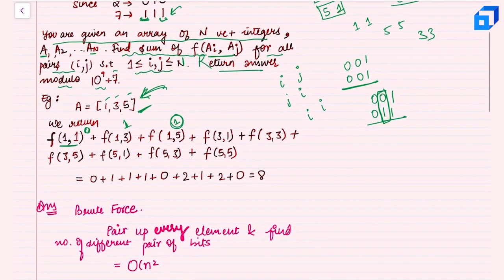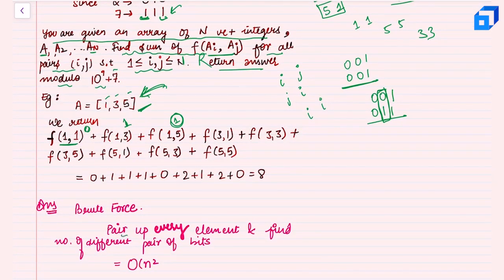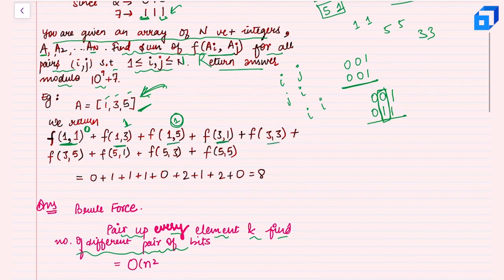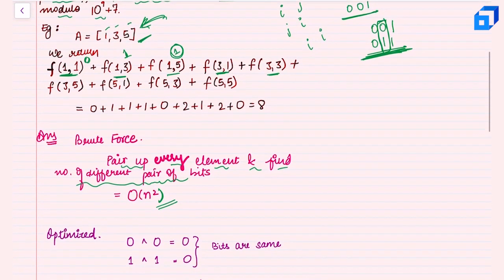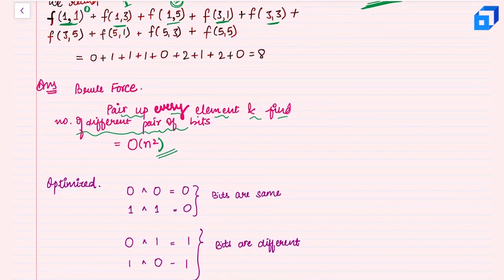The brute force approach is to pair up every element with every other element and find the number of differing bits for each pair. For example, with [1,3,5] we would compute all pairs: (1,1), (1,3), (1,5), (3,1), (3,3), etc. This gives us a time complexity of O(n²). Let's see if we can do better.